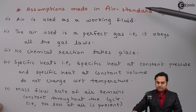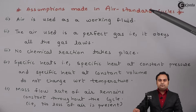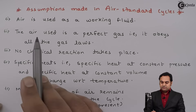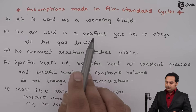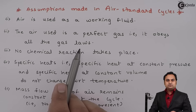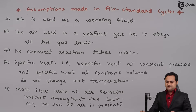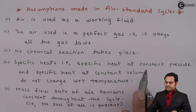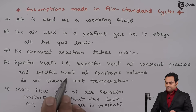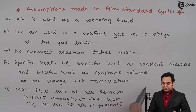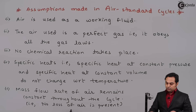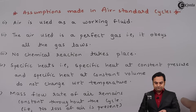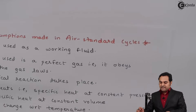To summarize, the various assumptions made in air standard cycles are: air is used as a working fluid; the air used is a perfect gas obeying all the gas laws; no chemical reaction takes place; specific heat at constant pressure and specific heat at constant volume do not change with respect to temperature; and the mass flow rate of air remains constant throughout the cycle — no loss of air is present.